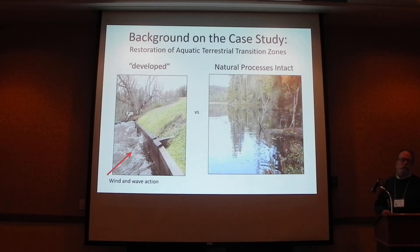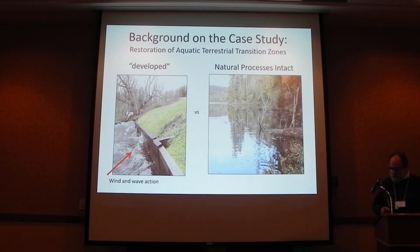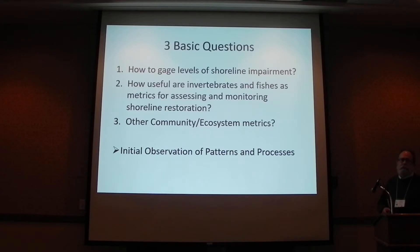I thought this would be a good opportunity to do something right on site. We have this brick wall on campus that's starting to fall apart, and it's also a place where two or three dozen geese like to show up. There are three basic questions we wanted to answer: how to gauge levels of shoreline impairment, how useful are invertebrates and fishes as metrics for assessing and monitoring shoreline restoration, and whether there are other community or ecosystem attributes useful for assessing shoreline conditions.